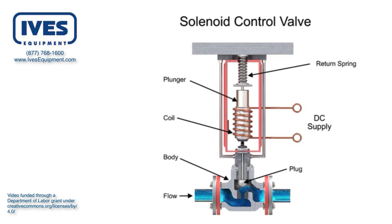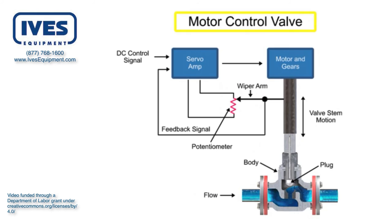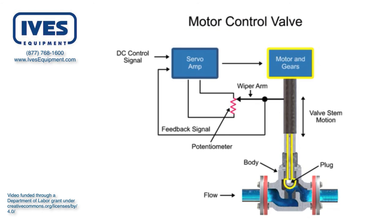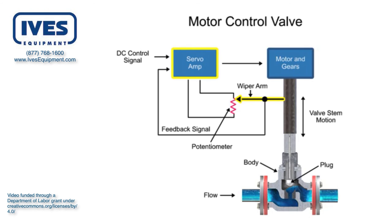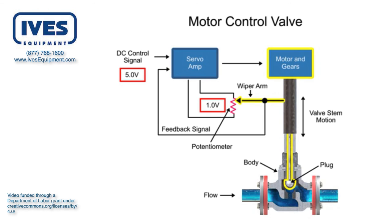Another method for variable valve positioning uses a motor and is referred to as proportional control mode. Using a gear motor attached to the valve stem, a servo amplifier provides a DC control signal that moves the valve to the desired position. Feedback is achieved with a wiper arm attached to the valve stem that sends a signal back to the servo amplifier where the position is monitored. The servo amplifier drives the motor until the control signal is equal to the feedback signal.